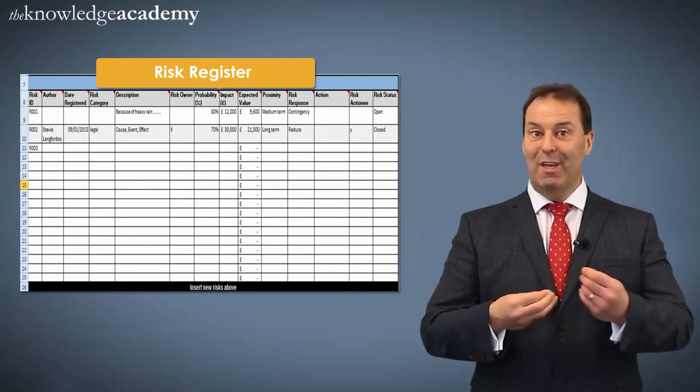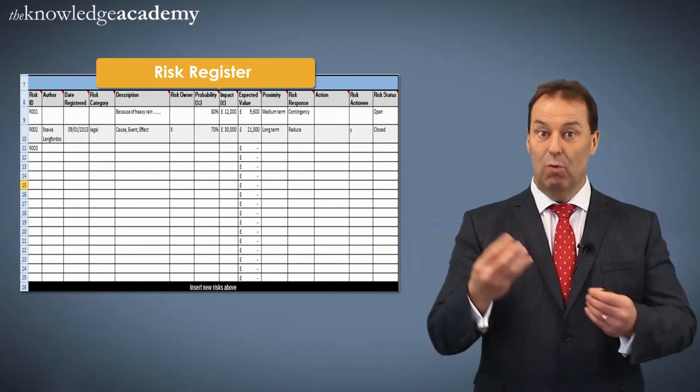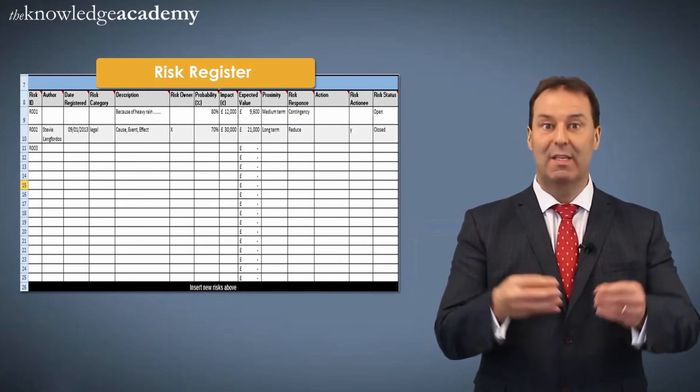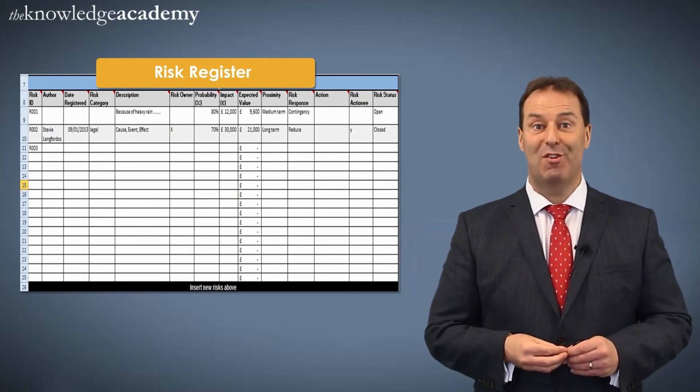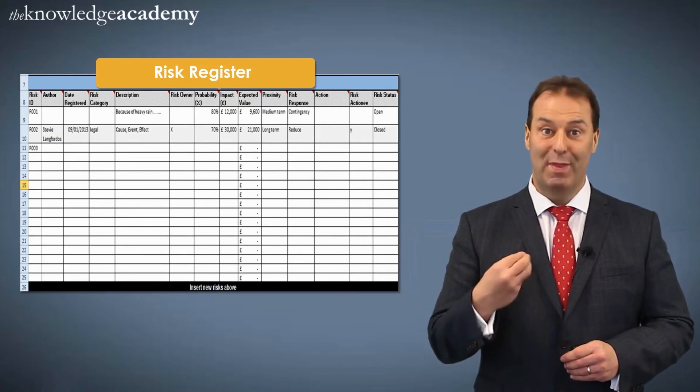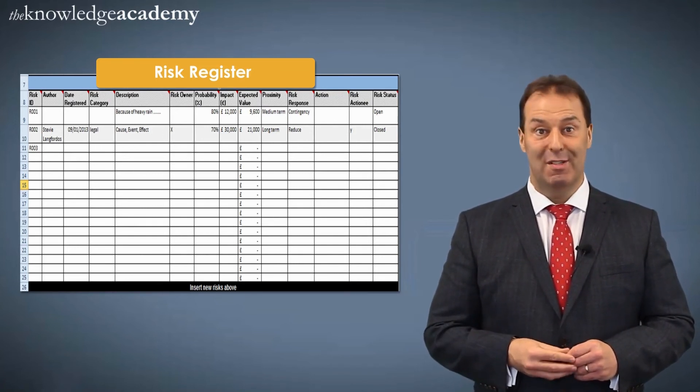Also, when we start looking at risk interdependencies or in other words risks which are linked together, you start to realise that it's far easier to track on a risk register when they're all recorded than if you start deleting them.